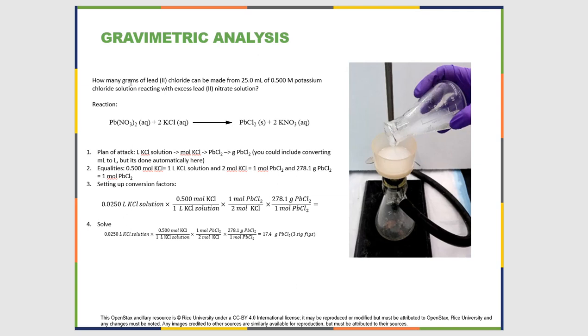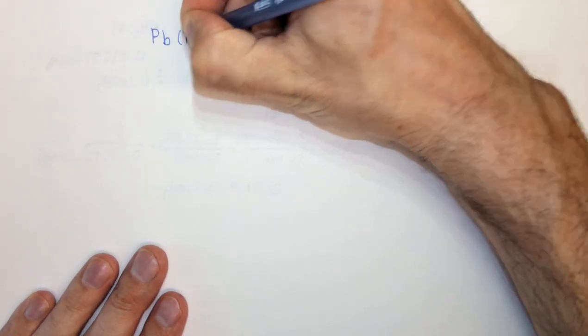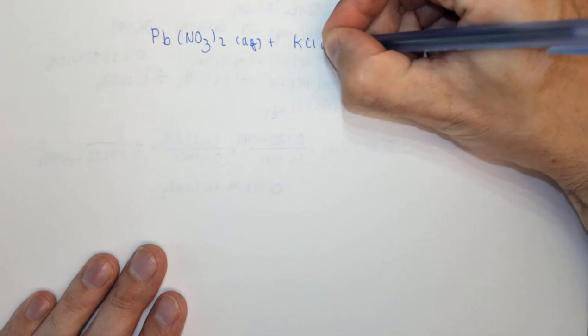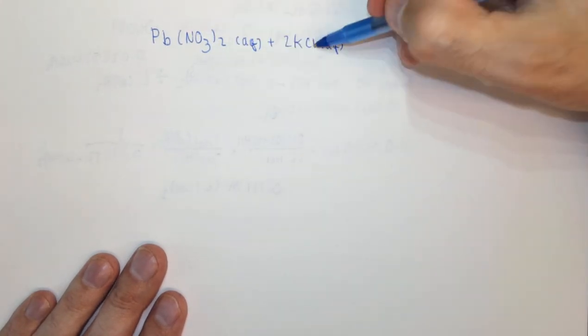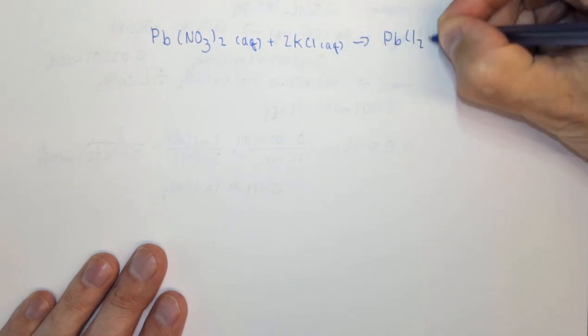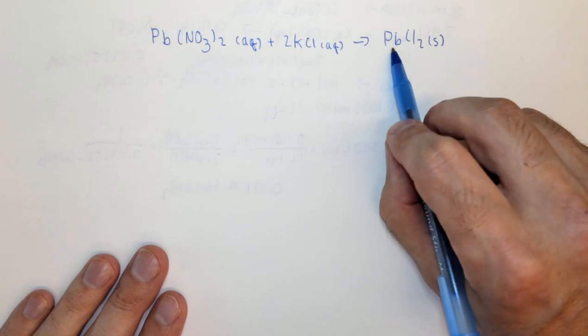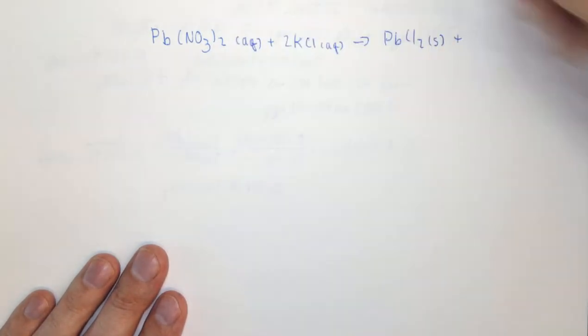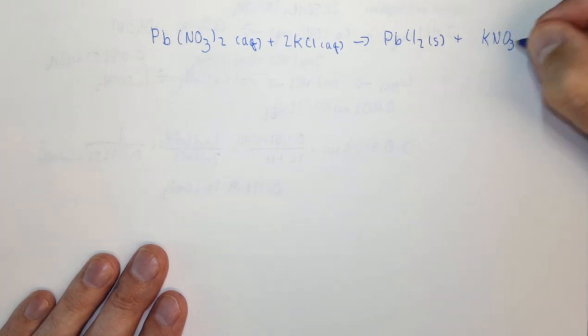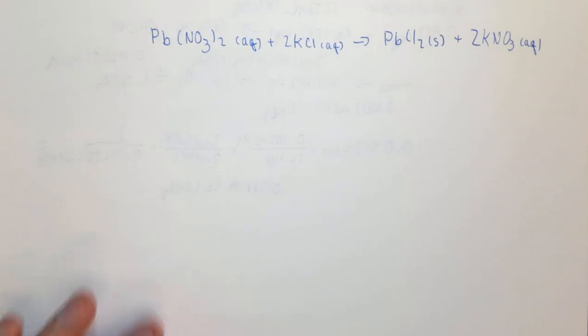The problem: how many grams of lead(II) chloride can be made from 25 mL of 0.500 molar KCl solution reacting with excess lead(II) nitrate solution? The balanced reaction is: Pb(NO₃)₂(aq) + 2KCl(aq) → PbCl₂(s) + 2KNO₃(aq). Pb goes with Cl to yield PbCl₂ as a solid—chlorides are generally soluble but lead is an exception. K⁺ goes with NO₃⁻ to give KNO₃, which is always soluble and aqueous.